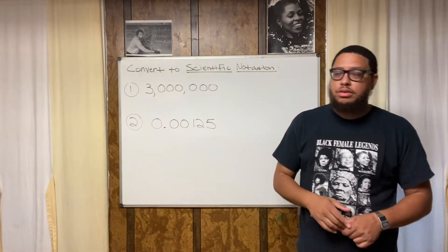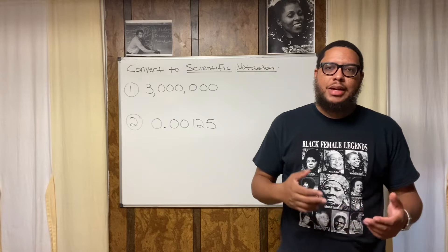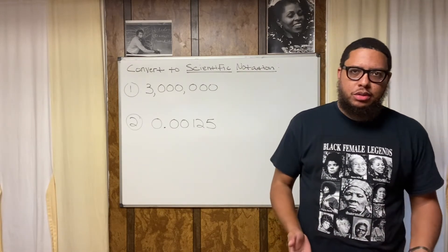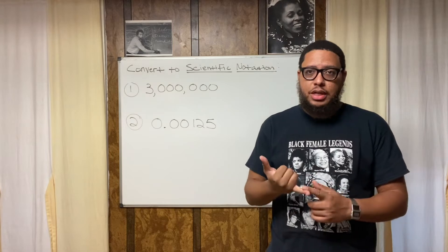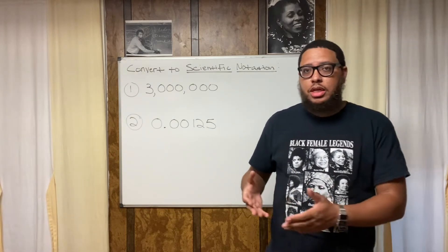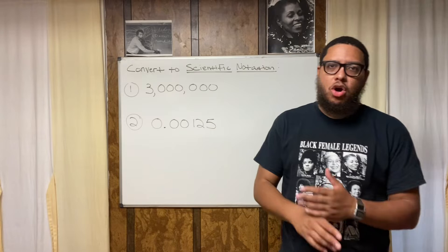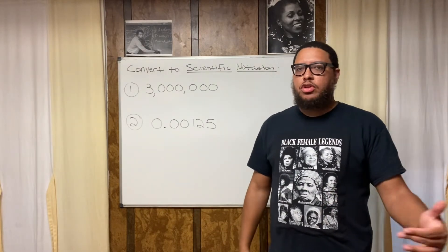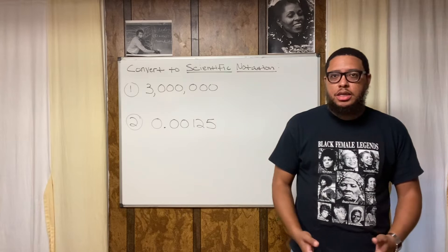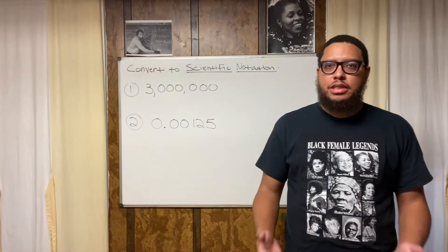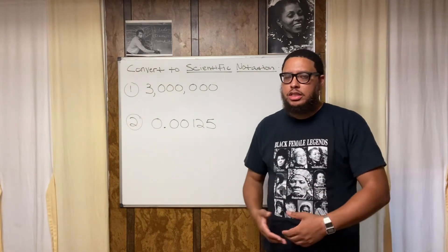Now let's talk about scientific notation. Scientific notation is one of those things that kind of gets annoying because it seems difficult, but it's really only difficult if you haven't been taught how to do it — which is kind of the case with a lot of algebra and math in general. You'll see scientific notation problems in a chemistry class, a physics class, a biology class, an algebra class, and a pre-algebra class.